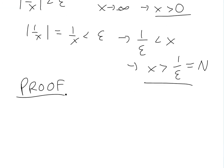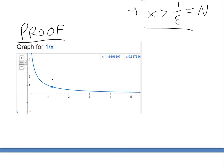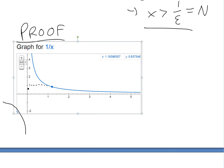To illustrate it better, let's graph it out. Looking at the graph of 1 over x on the positive side, we know the limit is approaching zero. If we give an epsilon value of 1 and draw a horizontal line there, then drawing a vertical line down gives us our N value of 1, because 1 divided by 1 is 1.